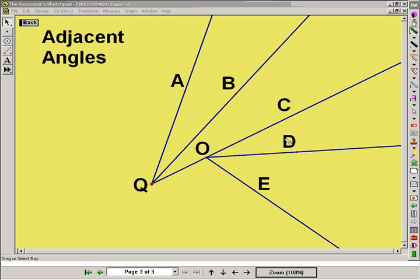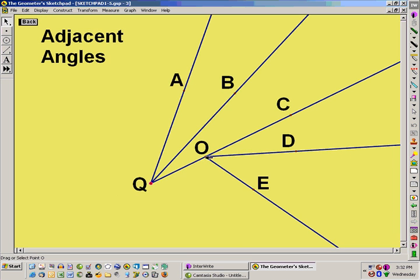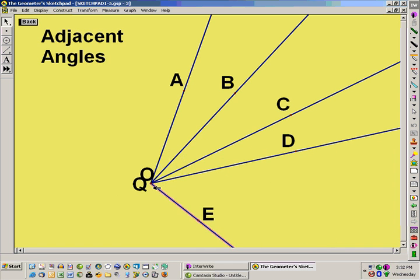What we do not have is that this angle is adjacent to this one. They may share a common side, but they certainly share different vertices. So if they share the same vertex, then we would have adjacent angles.